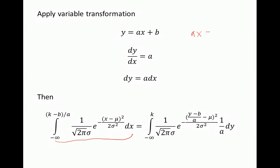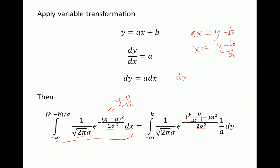From DY equals a times DX we get DX equals DY over a. If Y equals aX plus B, then aX equals Y minus B, so X equals Y minus B over a. Instead of X in the exponent we substitute Y minus B over a. Mu is a constant so it stays the same; 2 pi sigma and 2 sigma squared are all constants and stay the same. Instead of DX we write 1 over a times DY.